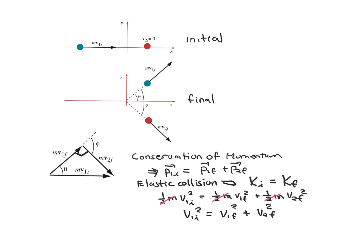So what we've concluded is that if this angle is a right triangle, then phi is also a right angle — a 90-degree angle. This tells us that for any collision between a cue ball and a target ball of equal mass, the angle between where the cue ball goes and where the target ball goes always has to be 90 degrees. So phi must equal 90 degrees.